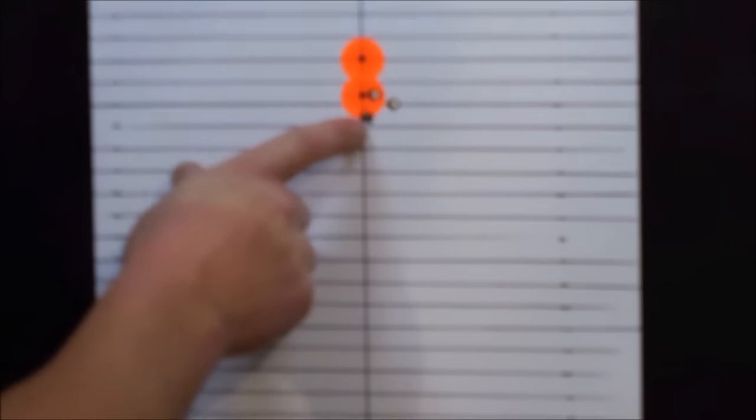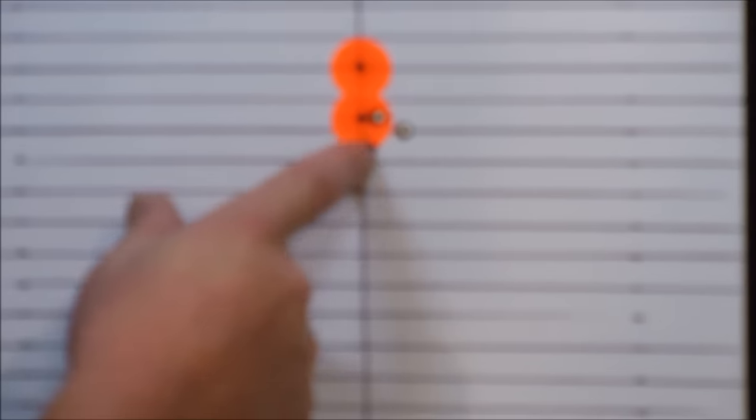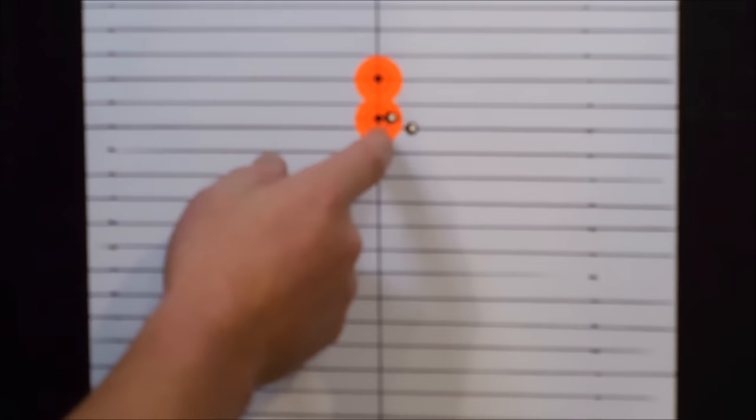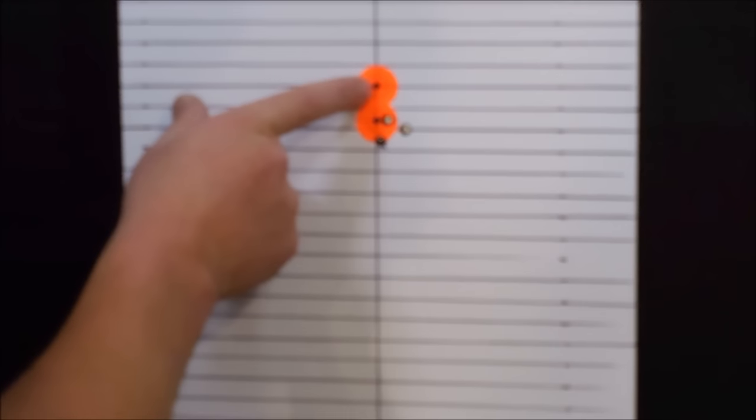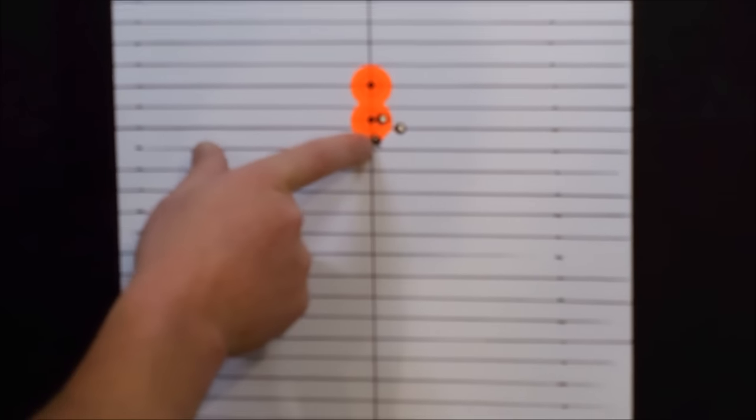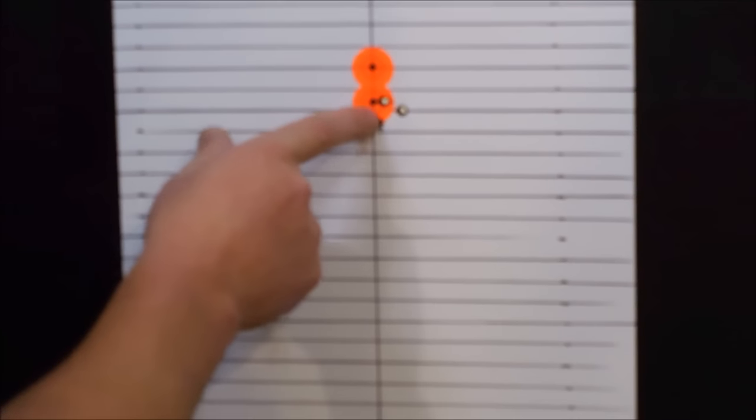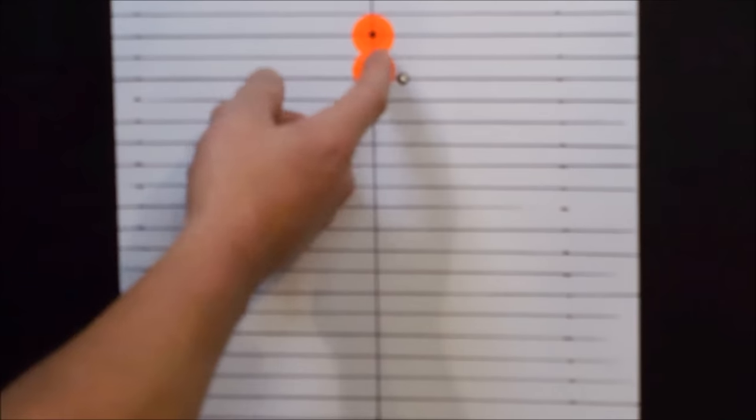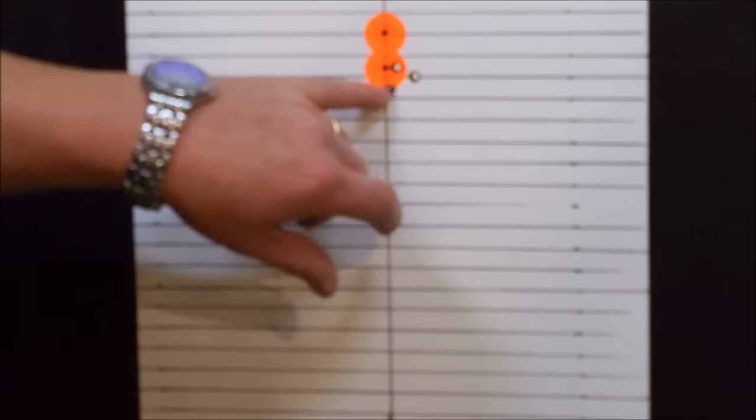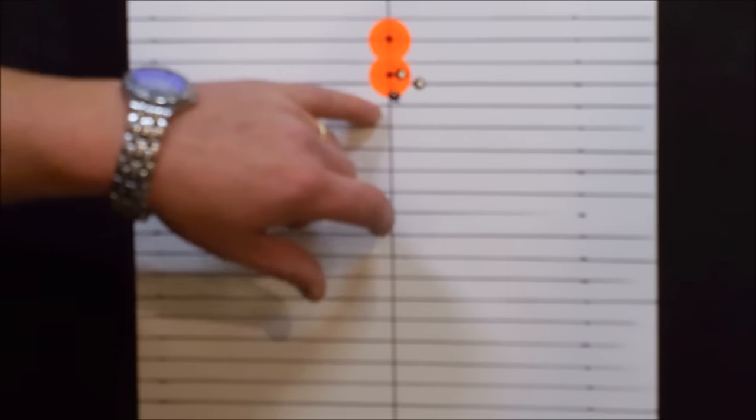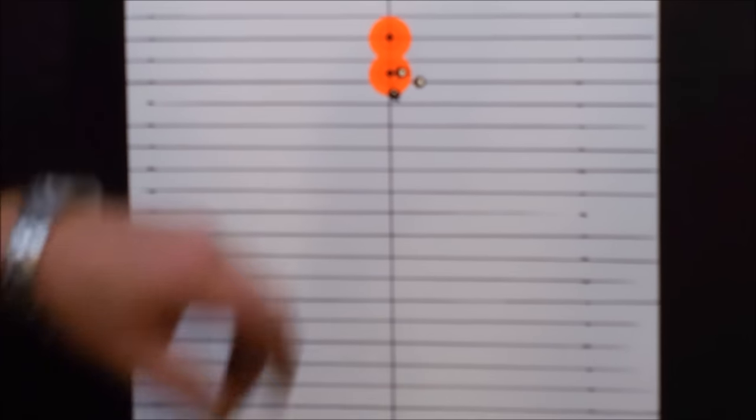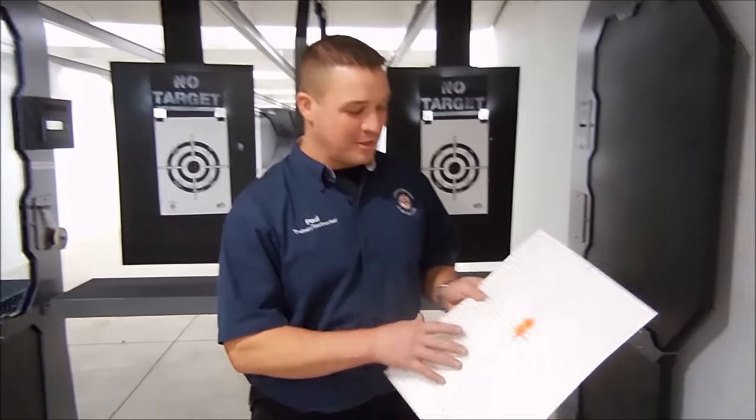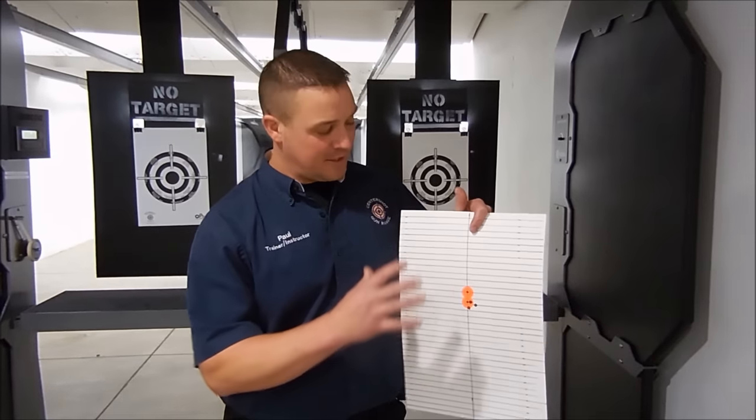All right guys, basically what we did here, we broke this line. I'm real happy with this group. I was aiming right on here. This is saying that this thing is going to be a tack driver at 100 yards. At 200 we're going to be roughly about two and a half to three inches low at 200 yards. So this gun's ready to go out in the field.